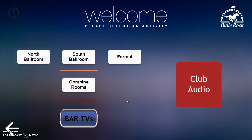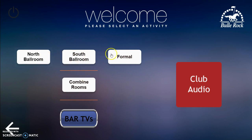On this page you have all of the controls that are available to you, and I'm also going to show you what I did with the bar TVs for future reference. As far as the ballroom goes, it's all of the white buttons in this vicinity. You have the north ballroom, the south ballroom, and the formal dining room, and then in this section you can combine the rooms — all three or individual ones.